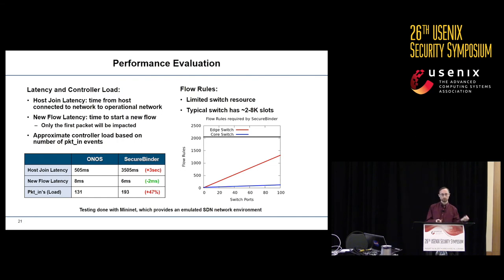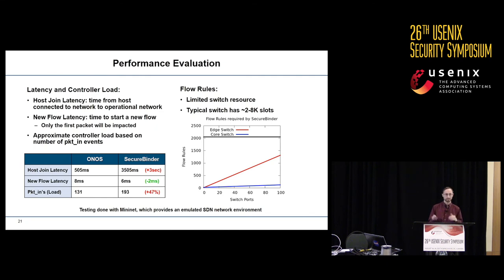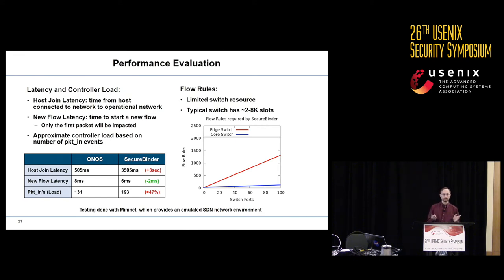We looked at controller packet processing load by measuring the number of packets sent to the SDN controller. We find that SecureBinder has a 47% increase over ONOS, which is fairly significant, but most of these additional packets are 802.1x authentication messages, so they only occur the first time you connect a device to the network. As a final part of evaluation, we looked at the number of flow rules required by SecureBinder, since these are a limited resource in switches — typically between 2,000 and 8,000 slots. A 48-port edge switch with 2,000 rules will require about a third of its rules dedicated to SecureBinder. Fortunately, for core switches that number is much less. Importantly, the number of flow rules required in any given switch is a function only of the number of switch ports on that switch, not of the total number of ports in the network.